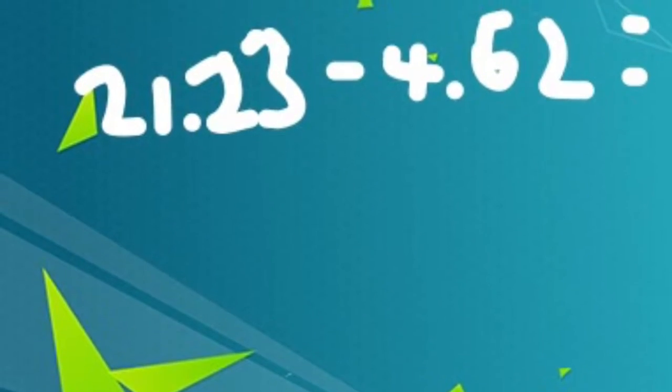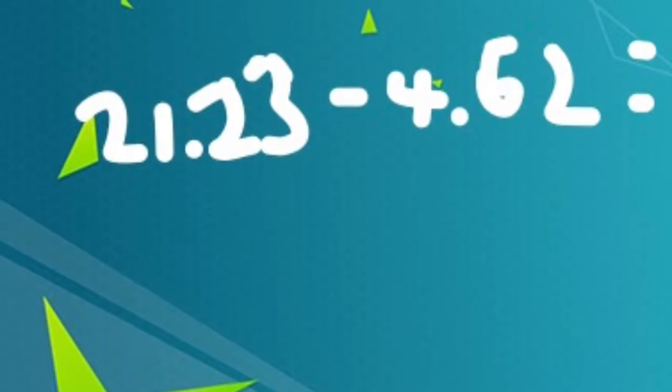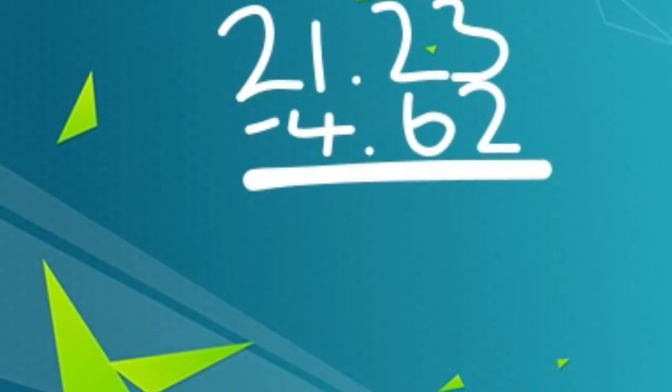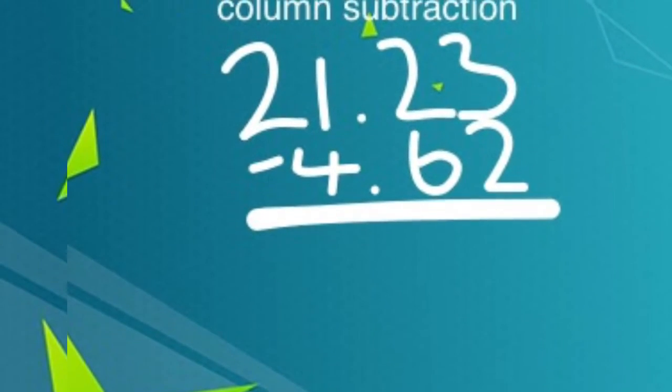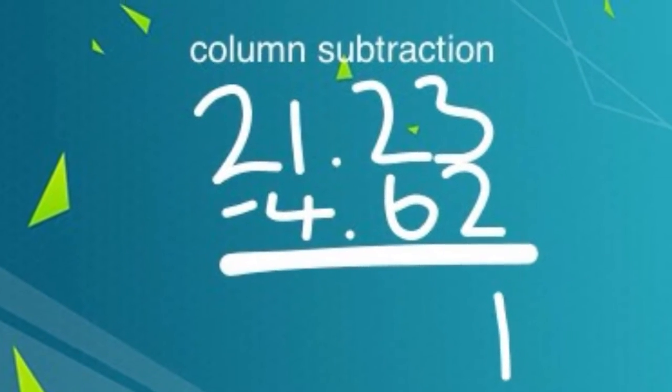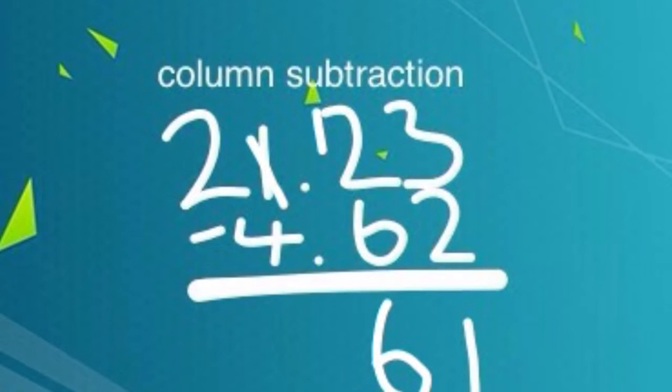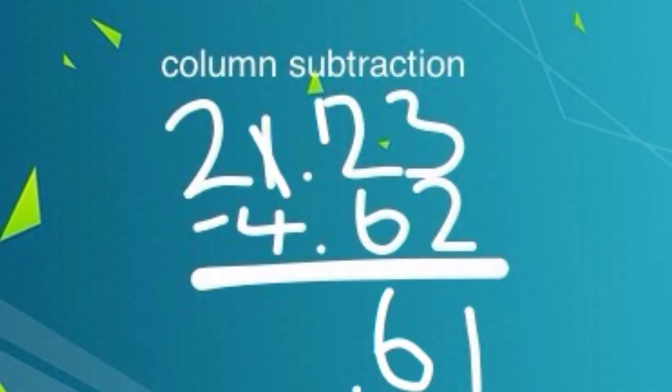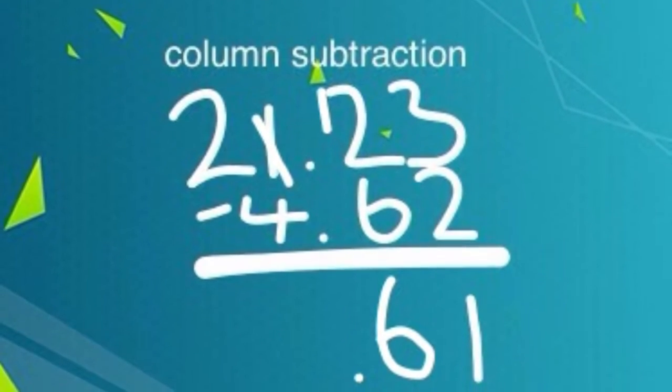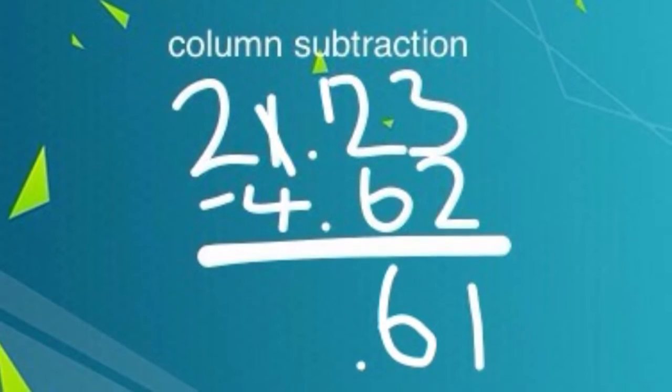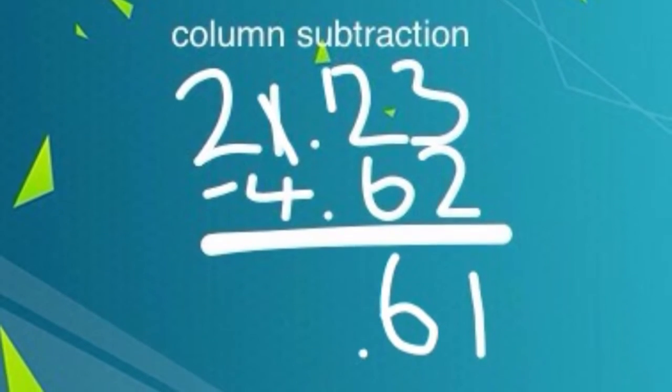Our first question is 21.23 minus 4.62. Now for column subtraction method. 0.03 minus 0.02 equals 0.01. 0.2 minus 0.6 cannot happen so we have to borrow the 1. So 12 minus 6 equals 6.